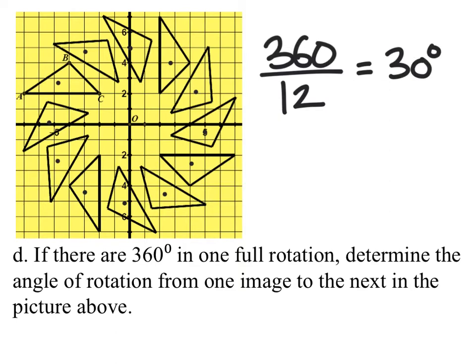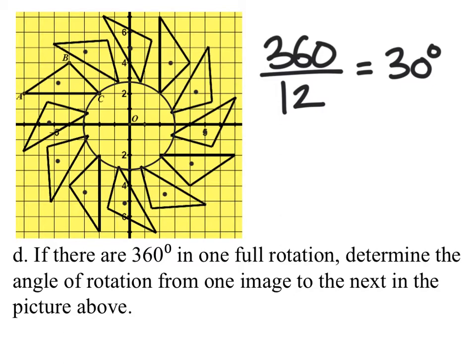That is the angle of rotation from C to C prime, then from C prime to the next C prime prime, and so on — working all the way around. All the C primes lie on the same circle. They're all on a circle because we're rotating about the same center, in this case the origin.